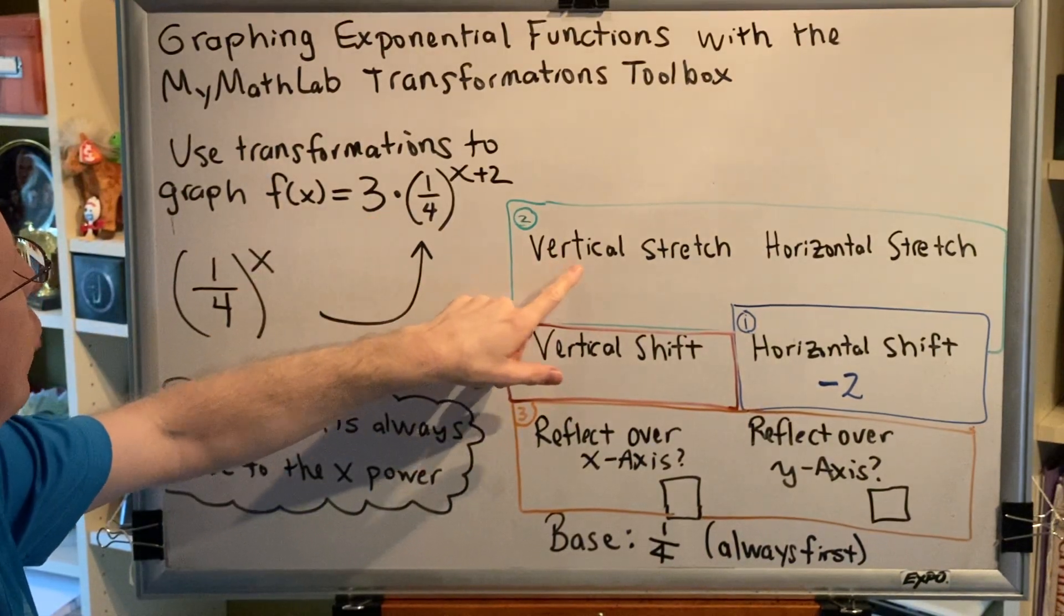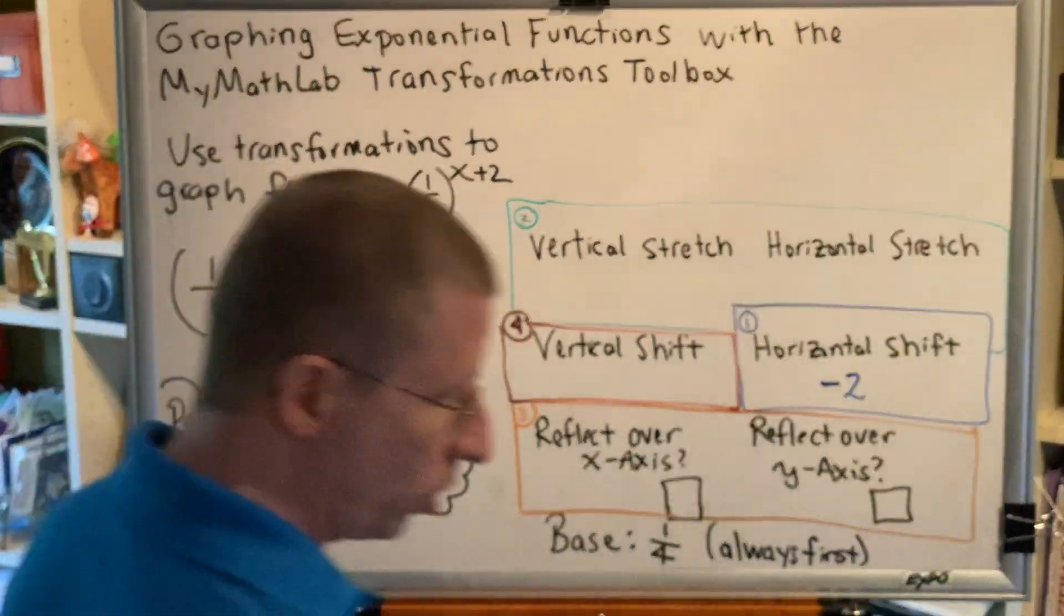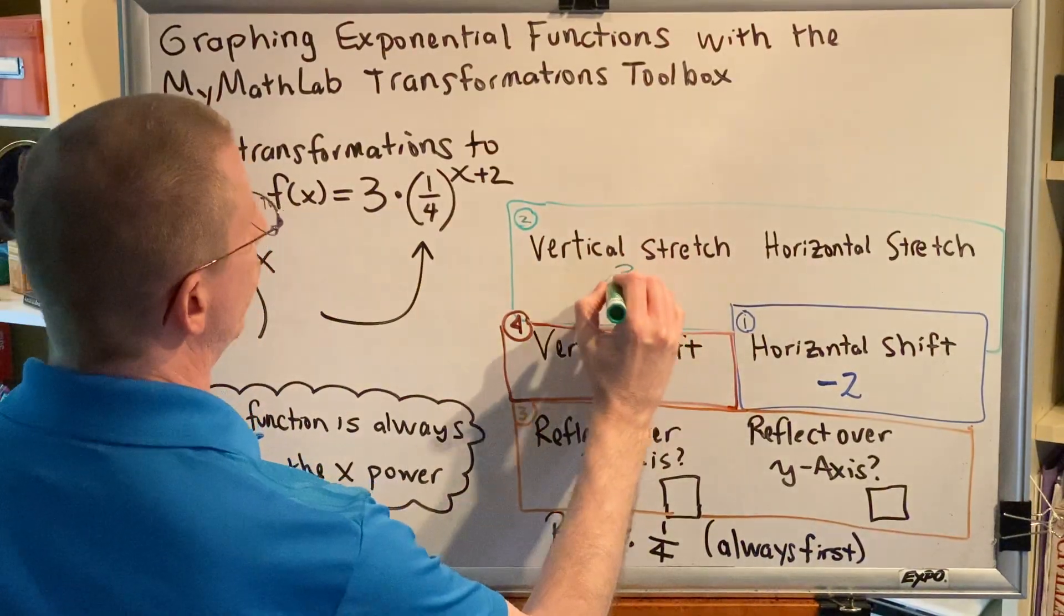So we are dealing with a vertical stretch here, and we're going to adjust this slider to a value of positive 3.